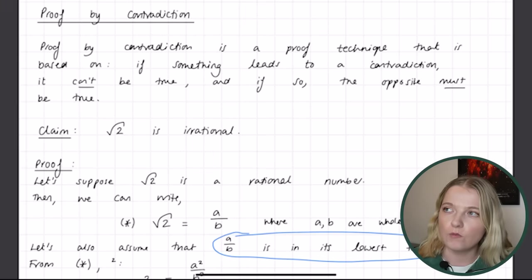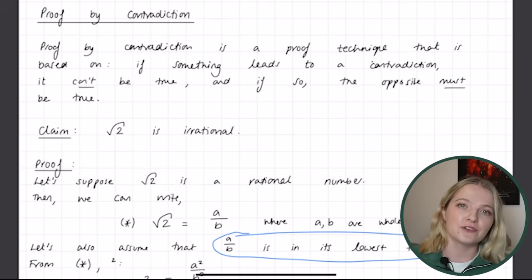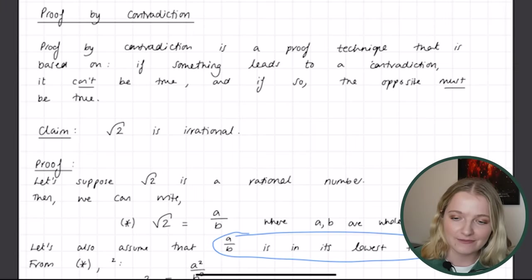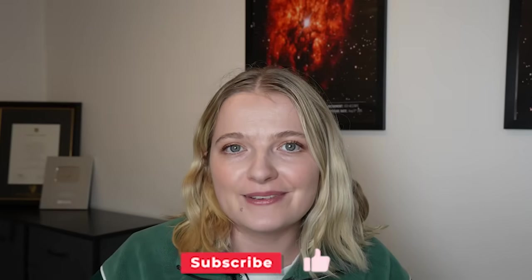When I was at university and saw a proof by contradiction, I was so excited — you have to think carefully about what you'll assume to be true and then how to show it leads to something contradictory. Something really interesting about this proof is that one of Pythagoras's followers, Hippasus, supposedly showed that root 2 is irrational, but the Pythagoreans believed only in rational numbers and considered this blasphemy. Legend has it he was thrown overboard for it. In the next video I'll prove that if a squared is even, then a must be even — make sure you tune in!